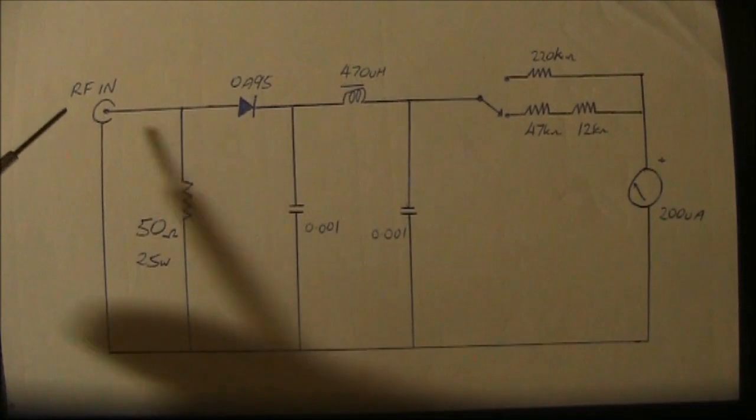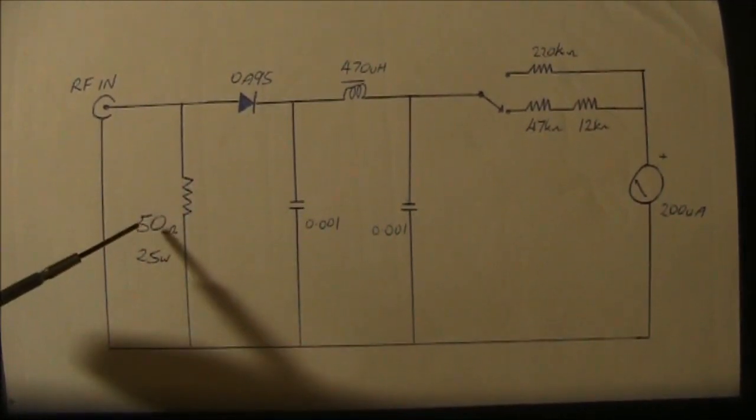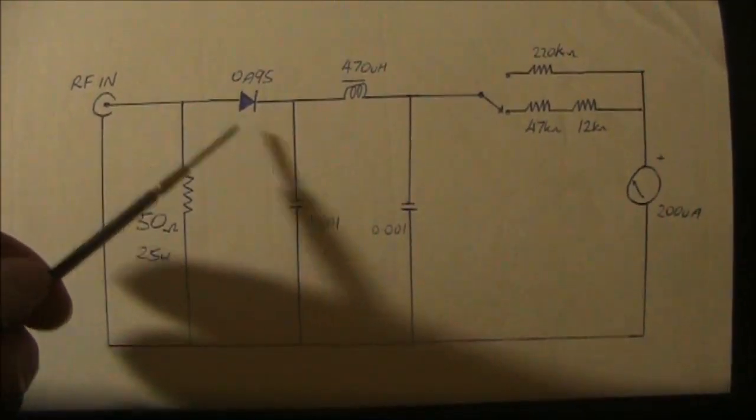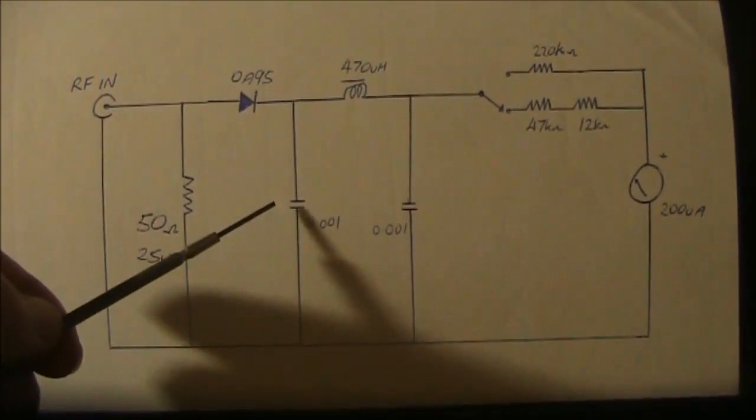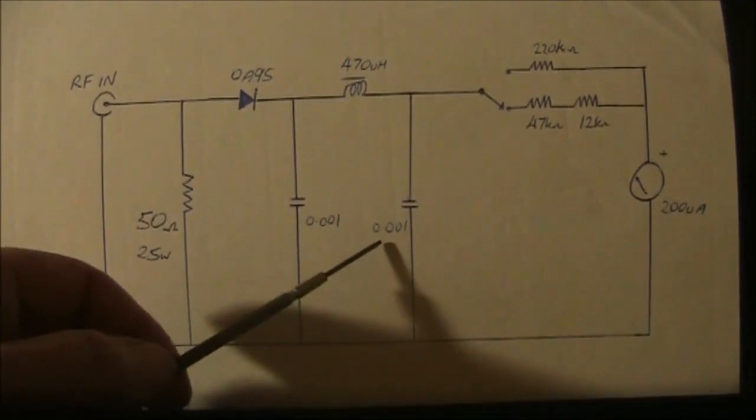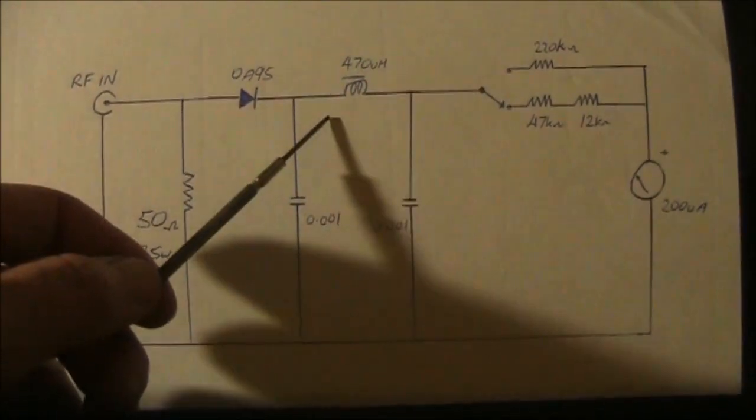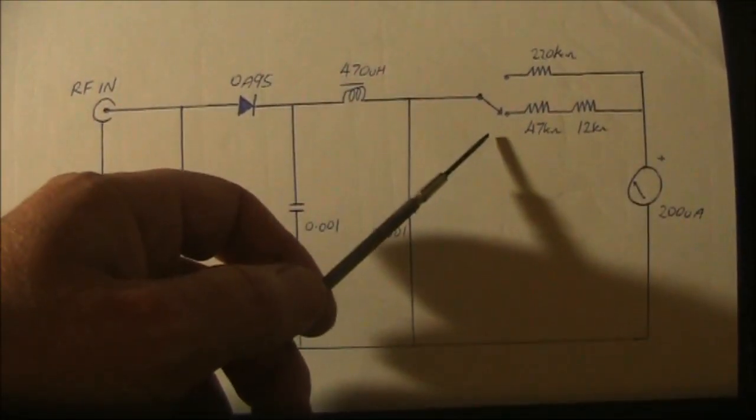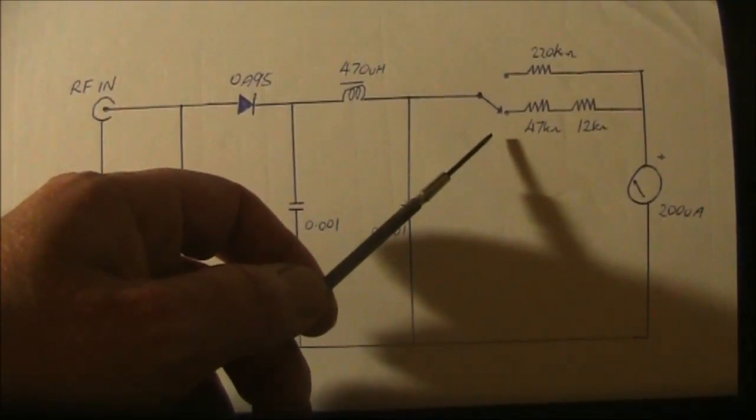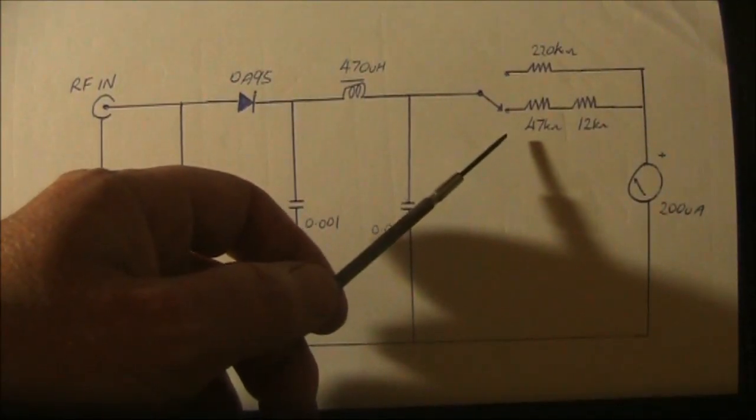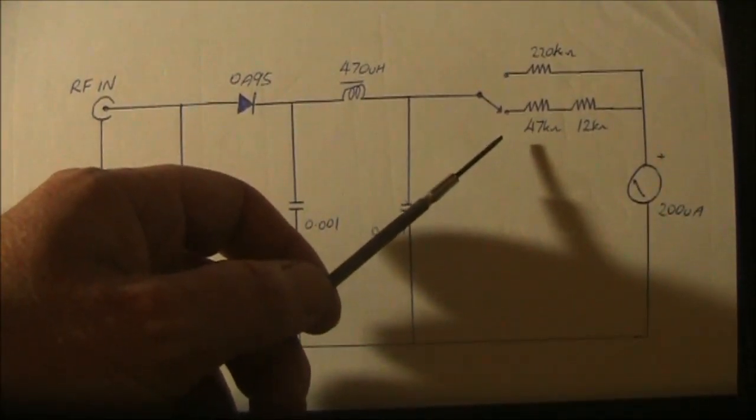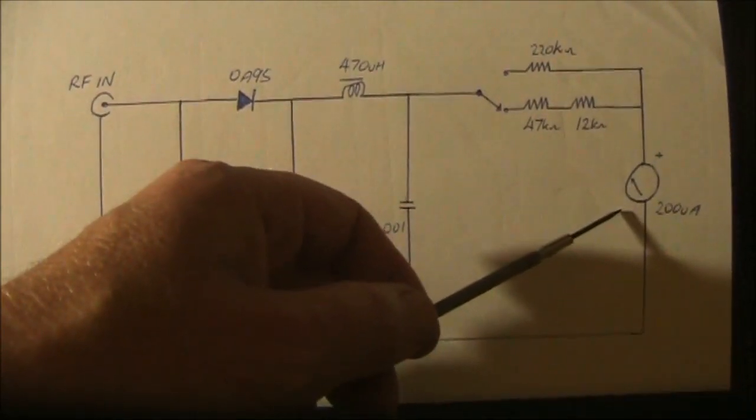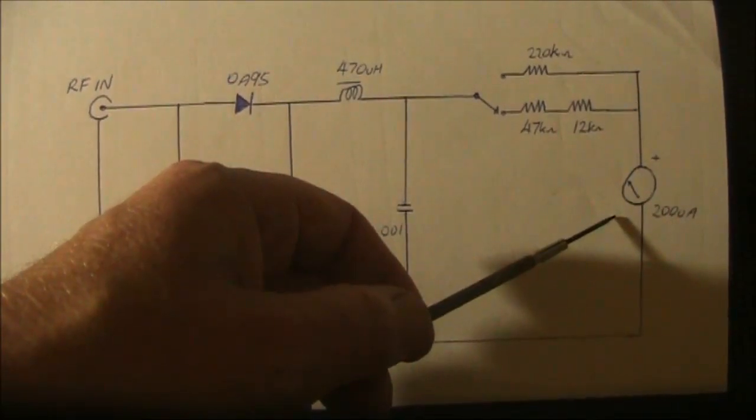This is the circuit, the RF input, 50 ohms worth of resistors, 25 watts, OA95, 0.001 disc ceramic capacitor, and another one of the same value, 470 microhenry RF choke, not critical. And then here in the top right are the two lots of resistors that you select for the RF power range. And finally, on the far right, is the 200 microamp meter movement.